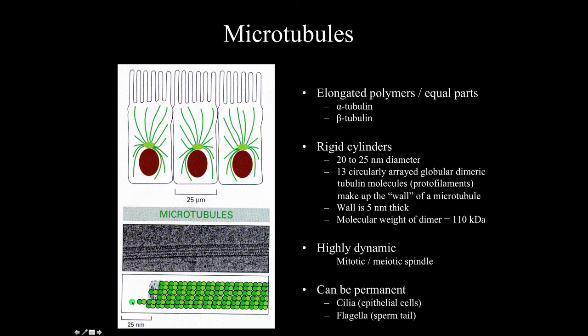In the diagram, a protofilament can be traced along the wall, and there are 13 such protofilaments arranged in a circle around the hollow tube. The wall is about 5 nanometers thick, and the molecular weight of the alpha and beta tubulin dimer is on the order of 110 kilodaltons.